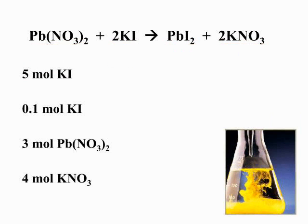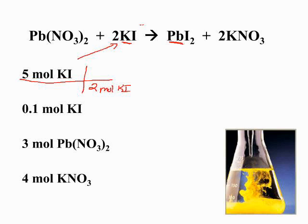You can take any amount of reactant or product and solve for any other reactant or product. Using this balanced equation, we're going to take five moles of the reactant potassium iodide and solve for how much product we would form. The product we're going to pick is lead 2 iodide. So if we have five moles of potassium iodide, according to the equation, two moles of potassium iodide will produce one mole of lead 2 iodide.